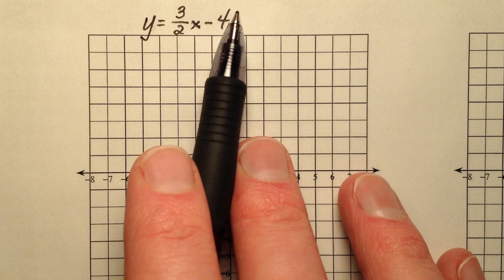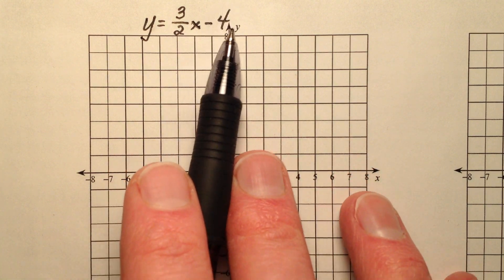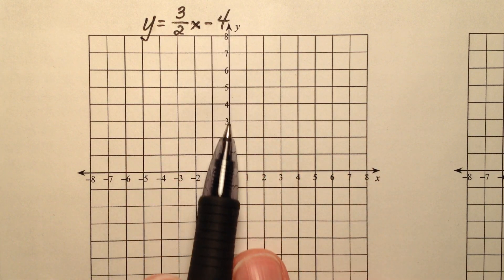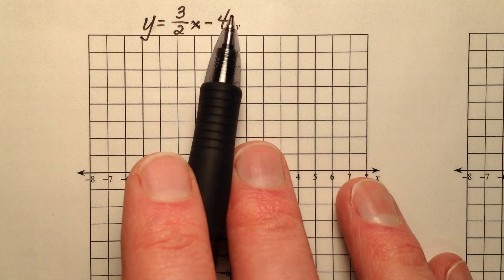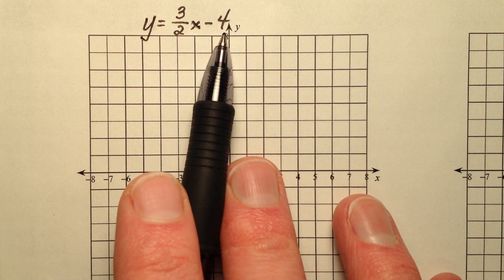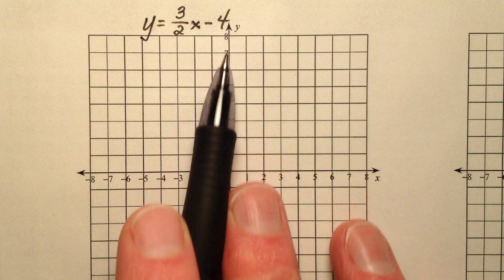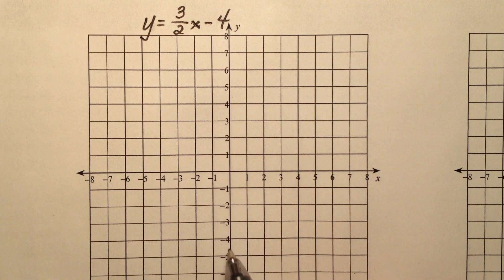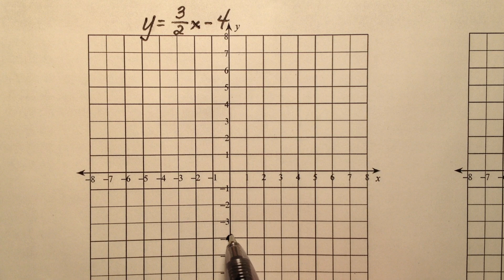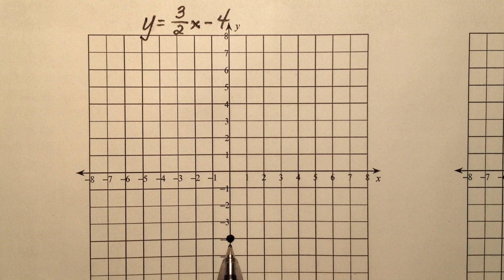We're going to start with the y-intercept, which is the constant, this value at the end here, and we're going to plot it along the y-axis. So this minus 4, which represents the y-intercept, is going to be the point on the y-axis. If we go down here at negative 4, we're going to put a point right here, and that's our y-intercept.